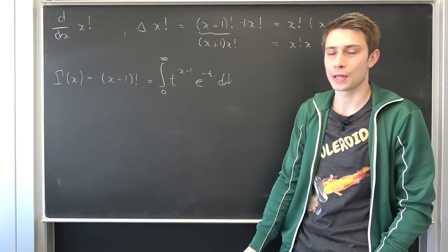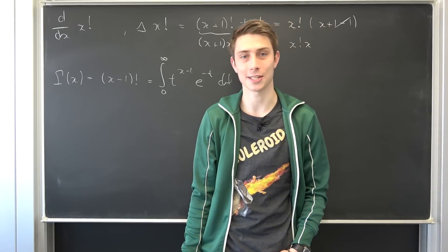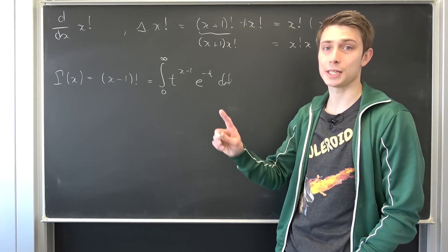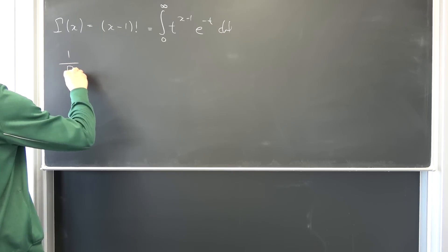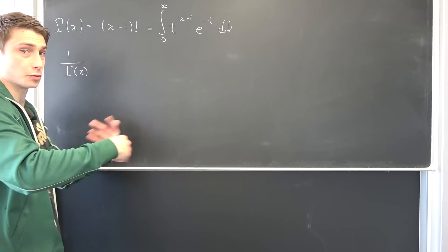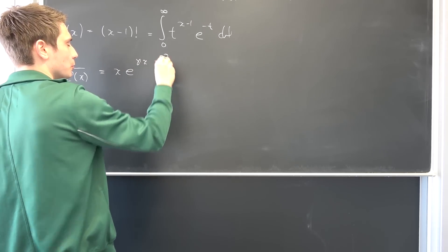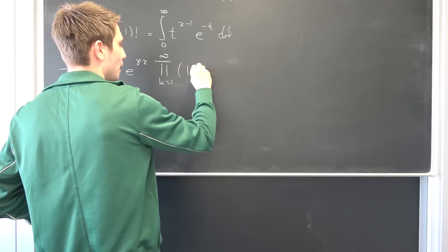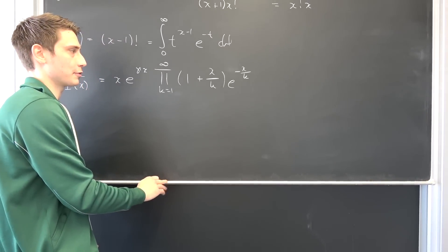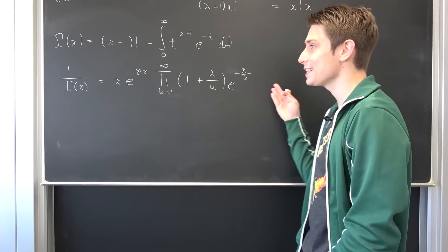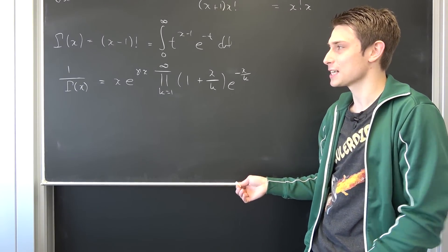I have introduced other definitions of the gamma function for this very reason. I'd like to take a look at the Weierstrass definition of the gamma function — it's pretty important and brings together the Euler–Mascheroni constant and the gamma function. The definition gives us: 1/Γ(x) = x · e^(γx) · ∏(k=1 to ∞) of (1 + x/k)·e^(−x/k). We can use implicit differentiation here.